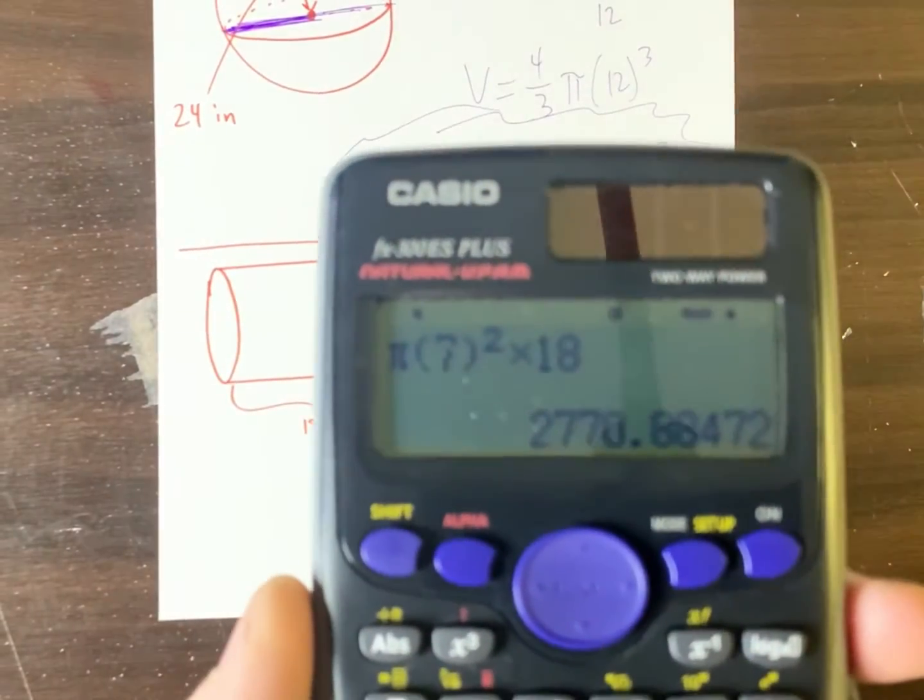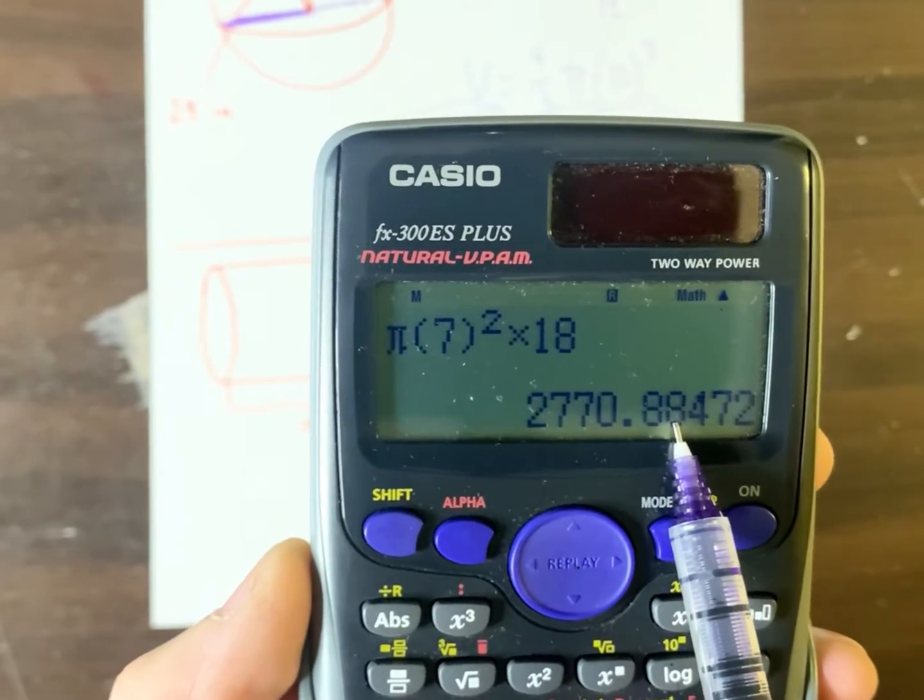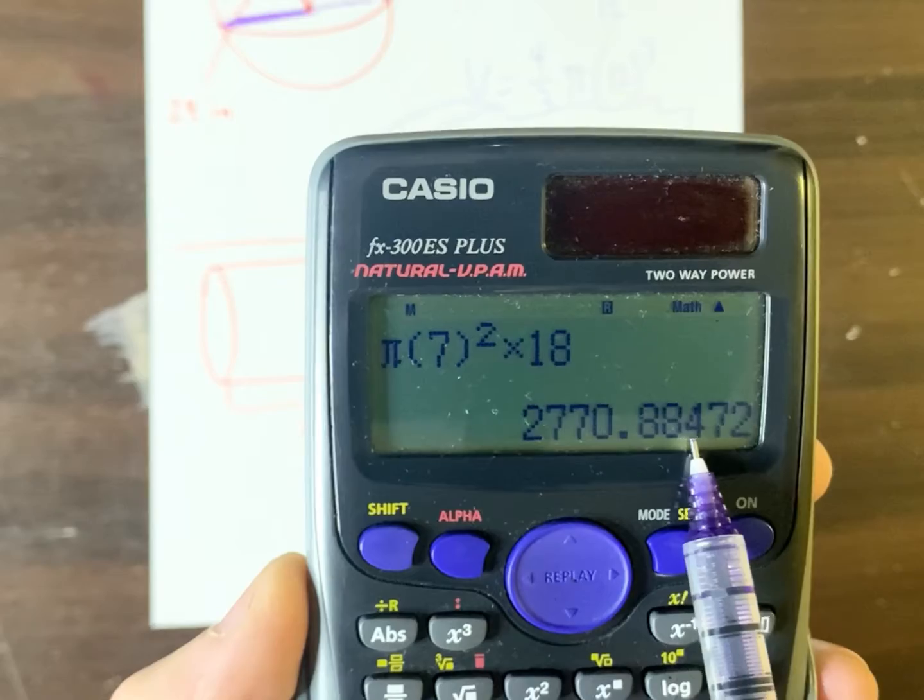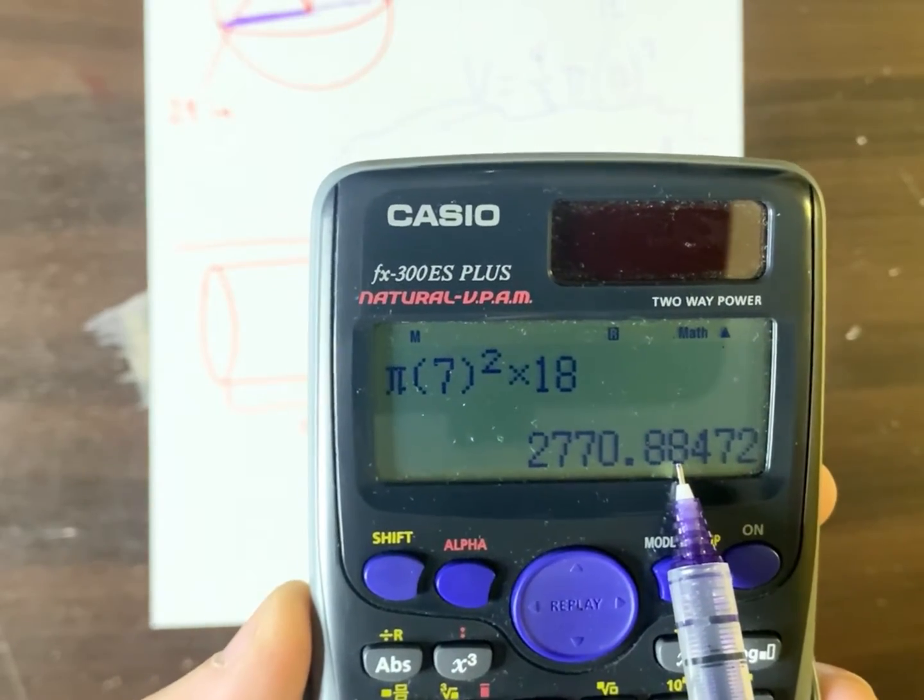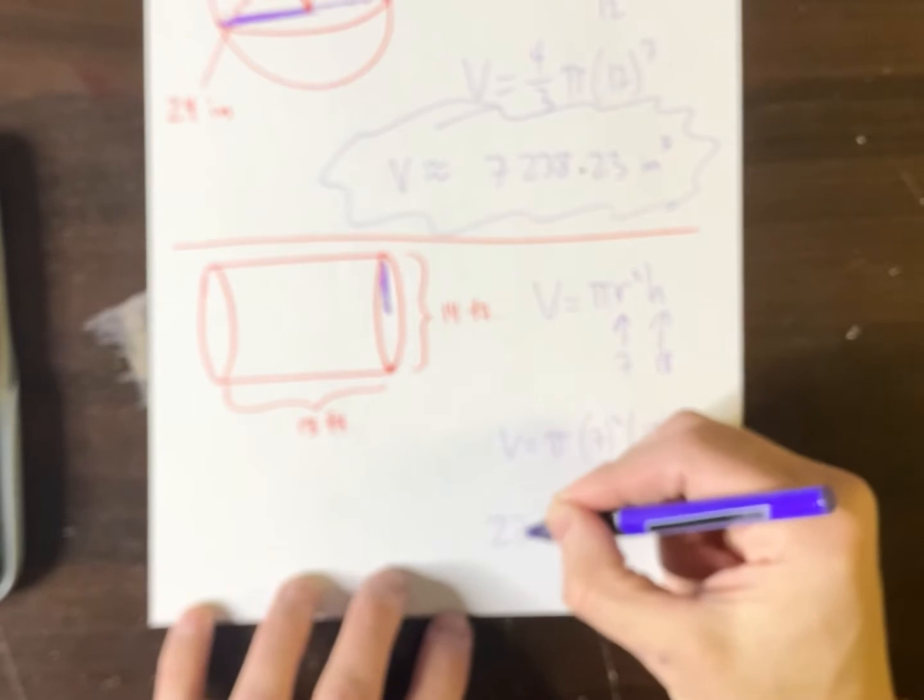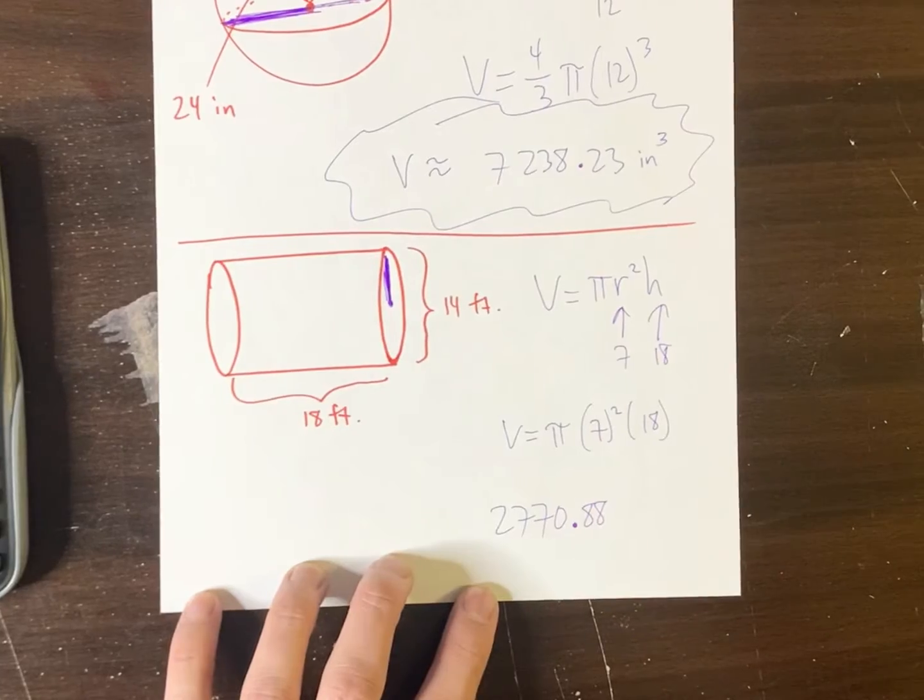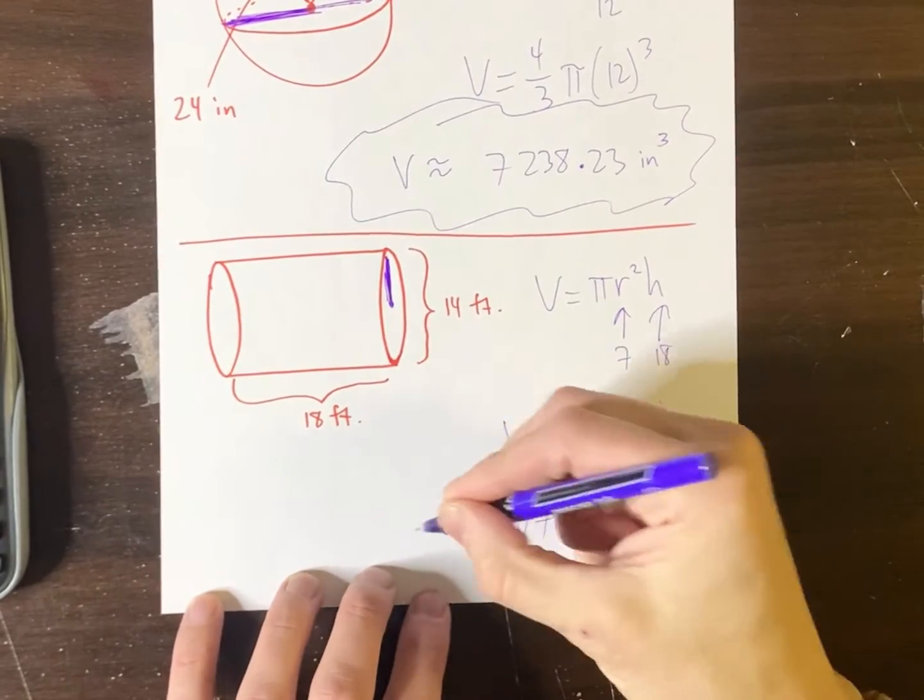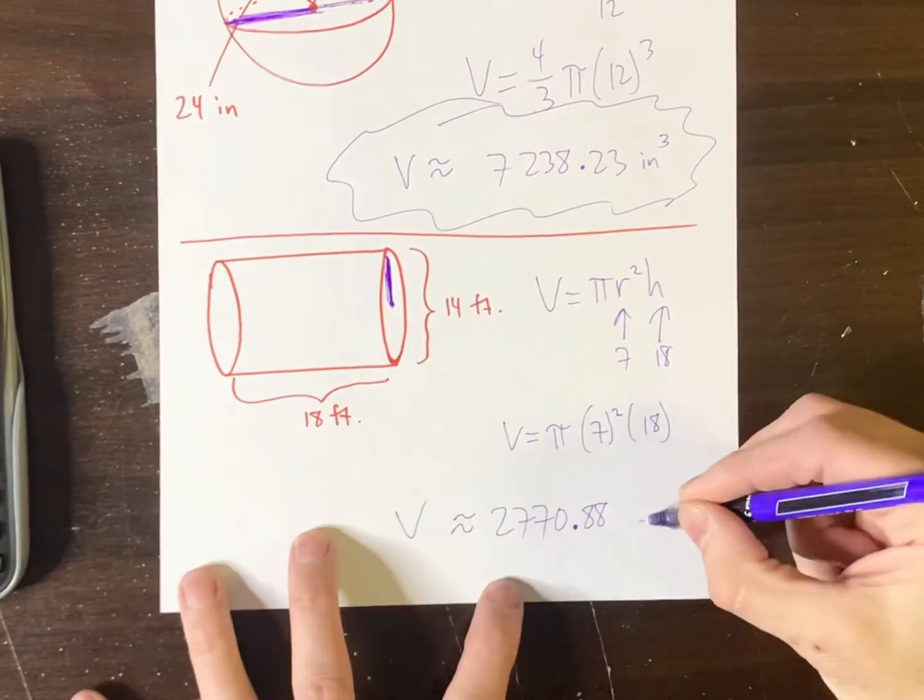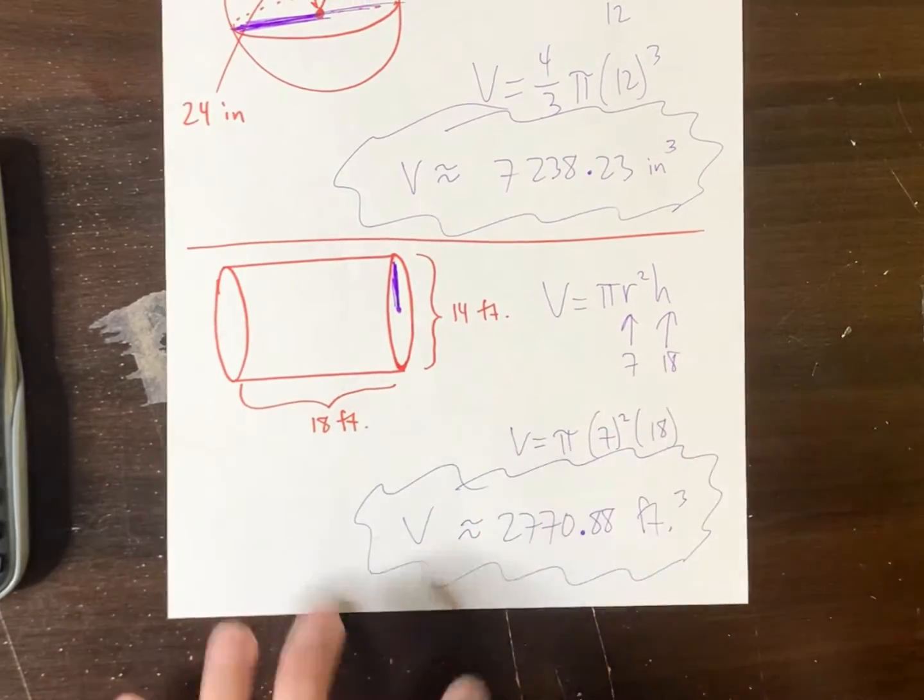And let's see. So let's try this rounding again. So this is going to be 0.8. Now look, that's what I have to round. And since that's a four, that stays eight. So we got 2770.88. And that would, of course, be the approximate volume. This was feet. So we say cubic feet.